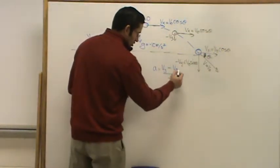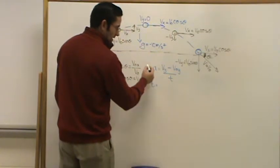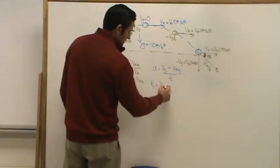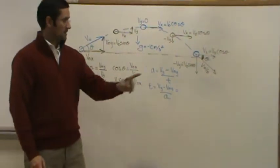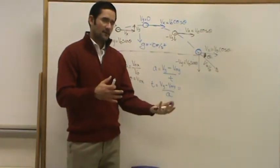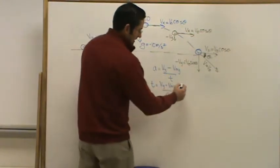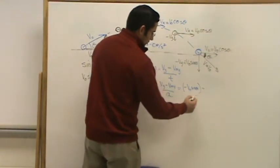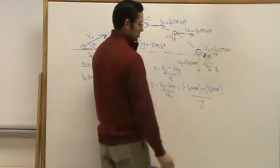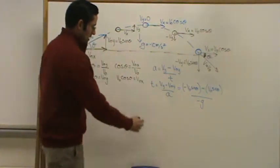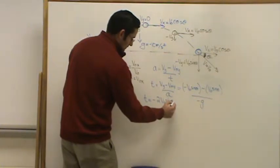Solving for time: time equals final velocity minus initial velocity over acceleration. Using vertical velocities, the final vertical velocity is negative V naught sine theta, the initial vertical velocity is V naught sine theta, and the acceleration of gravity is negative 10 meters per second squared. This simplifies to: negative V naught sine theta minus V naught sine theta equals negative 2 V naught sine theta, divided by negative g. The negatives cancel, giving us the time for the ball to travel from start to finish.